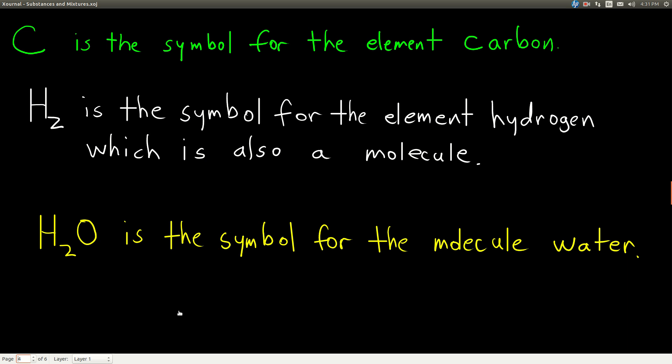The symbol for the element hydrogen is H2. The two here just means there are two atoms of the element hydrogen attached to each other. That's the form that hydrogen takes. It's still an element because there's just one kind of atom in there.